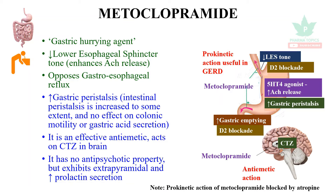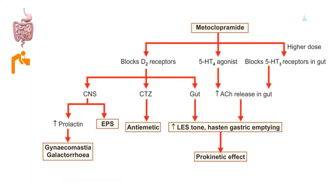An important point to note: the prokinetic action of metoclopramide can be blocked by atropine, because it increases acetylcholine release. For metoclopramide, three key points must be remembered: it blocks D2 receptors, it is a 5-HT4 agonist, and it also blocks 5-HT3 receptors in the gut at higher doses.